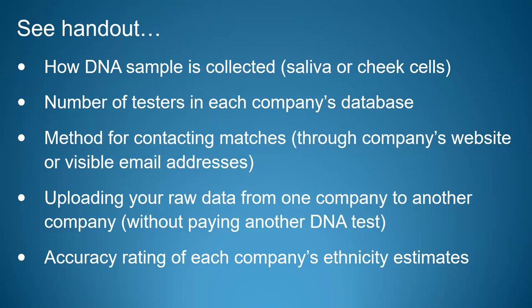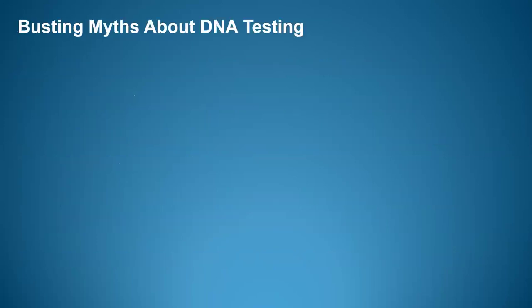Also on the handout is an accuracy rating. These companies have been rated by an organization called the International Society of Genetic Genealogists on the accuracy of their ethnicity estimates, and that accuracy rating for each company is listed on your handout.